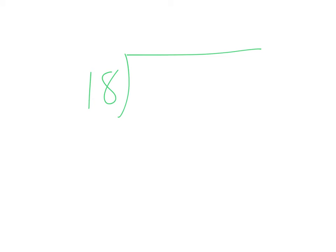We're going to practice one more. This time I'm going with a divisor in the teens — I'll use 18 — and a dividend of 5,988. This changes things up a bit because with teen divisors there's a chance you might know some of those facts. Some students know their 15s or their 14s. This one is 18.